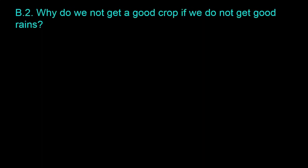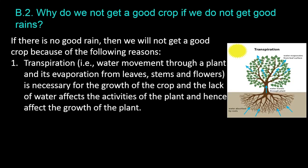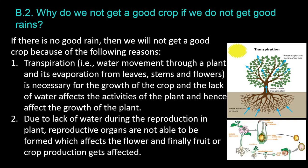Question B.2: Why do we not get a good crop if we do not get good rains? If there is no good rain, we will not get a good crop because: Transpiration — that is, water movement through a plant and its evaporation from leaves, stems, and flowers — is necessary for the growth of the crop. Lack of water affects the plant's activities and hence its growth. Also, due to lack of water during reproduction, reproductive organs cannot form properly, which affects flowers and finally fruit or crop production.